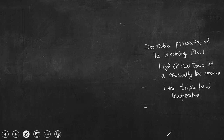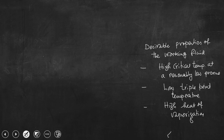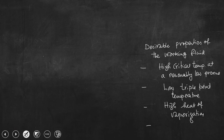Then, high enthalpy of vaporization, or high heat of vaporization. And finally, the vapor pressure should be relatively close to atmospheric at a desirable condensation temperature. The meaning of high heat of vaporization is that if we can ensure this property, then the mass or weight of the fluid in the cycle will be minimum.